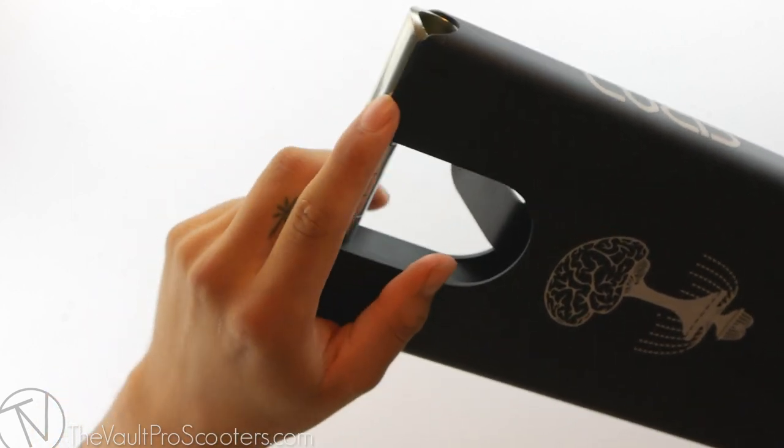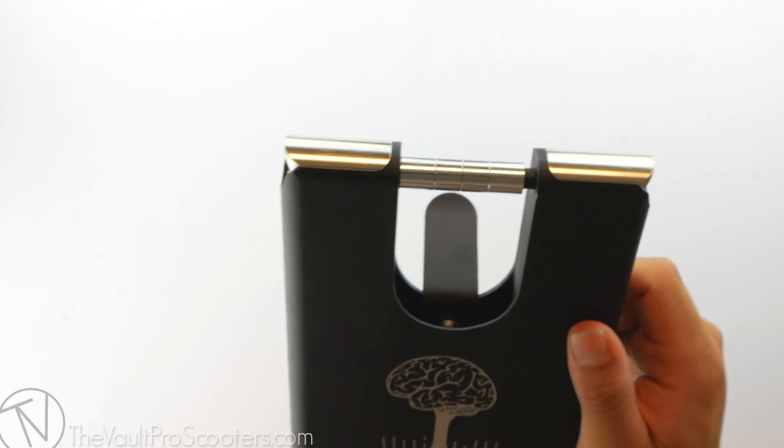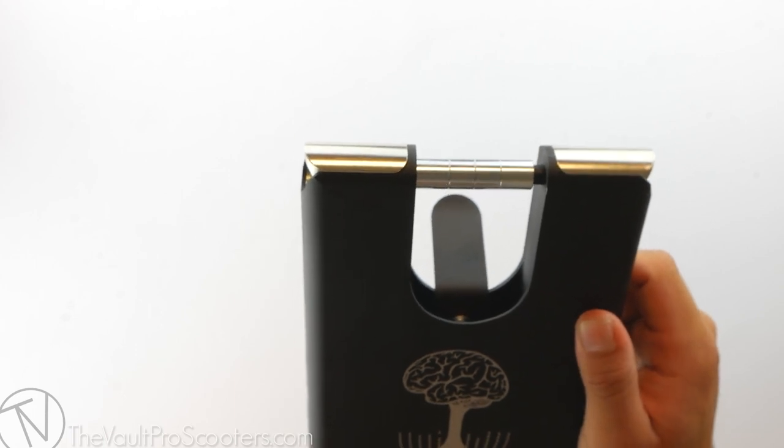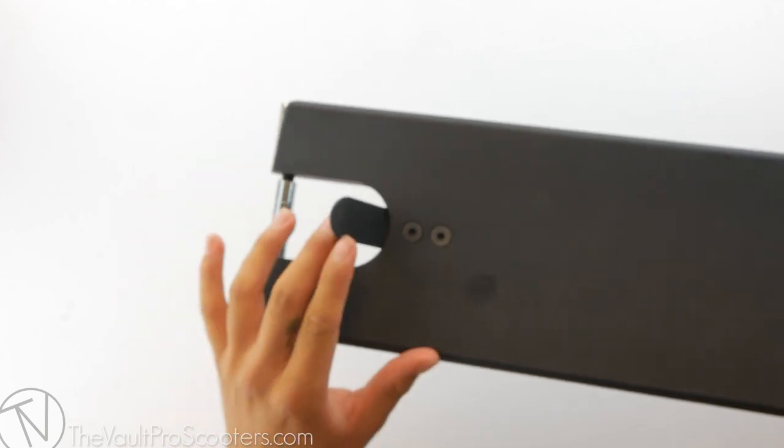The back dropout inserts are also rounded, so they'll make your grinds feel smoother. The Lucid deck is compatible with up to 125 by 30 millimeter wide wheels. Sold with the Lucid deck is a two-bolt flex brake.